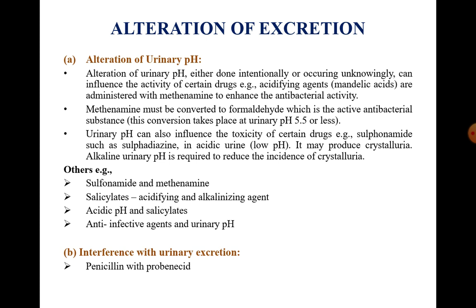The urinary pH can also influence the toxicity of certain drugs, such as sulfonamides like sulfadiazine; in acidic urine it may produce crystalluria. Alkaline urinary pH is required to reduce the incidence of crystalluria — crystalluria refers to the cloudiness of urine caused by crystals found in the urine when performing a urine test. Another example, sulfonamide with methenamine: acidic urinary pH is required for methenamine activity, but this pH could cause precipitation of sulfonamides and produce crystalluria.